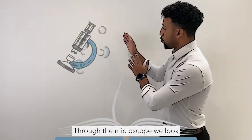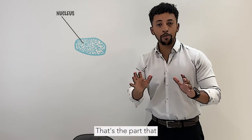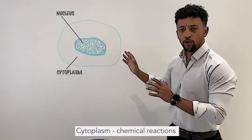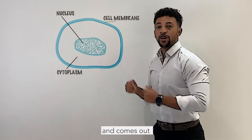Through the microscope we look, animal and plant cell structure is easy. Right in the middle is the nucleus, that's the part that makes things happen. Cytoplasm, chemical reaction. Cell membrane, it goes all around, controls what comes in and comes out.